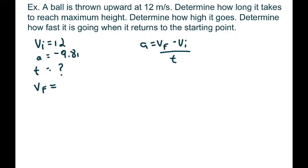The next example: a ball goes upwards at 12 meters per second. How long does it take to reach maximum height? How high does it go? And how fast is it going when it hits the ground? For part one: VI = 12, A = −9.81, and we're looking for time. The key thing to remember is that when the ball reaches the peak and stops, its velocity is zero. So we use VF = 0, because it stops at maximum height.